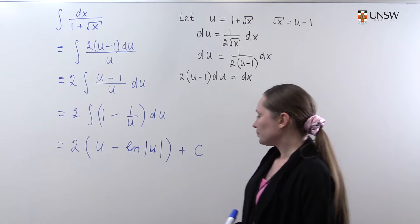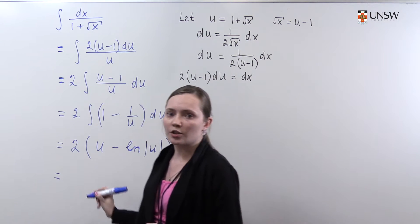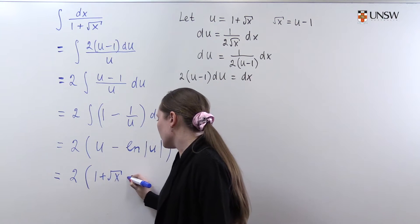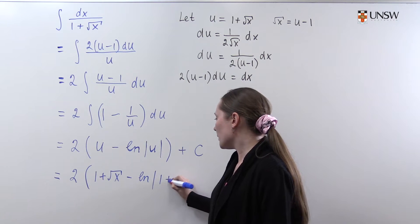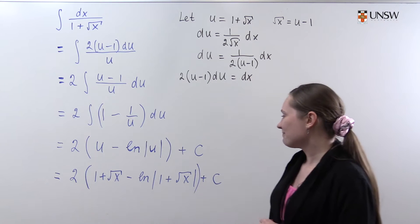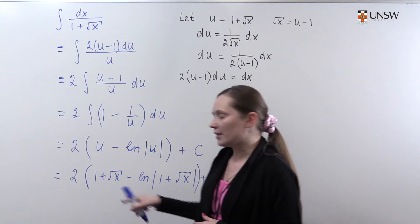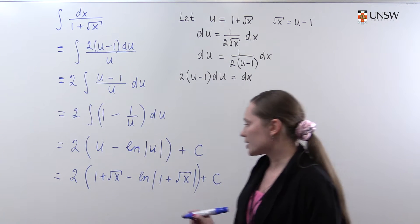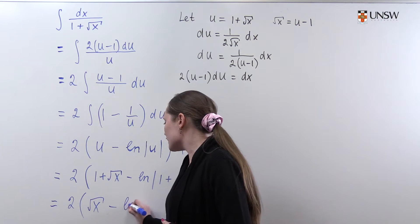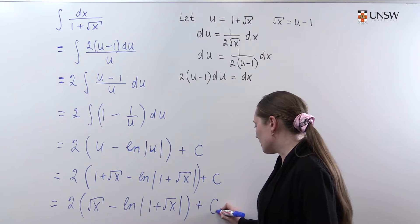Of course we need a constant of integration. Next we use back-substitution to express the answer in terms of x, remembering that u is 1 plus square root of x: we get 2(1 plus square root of x) minus the logarithm of (1 plus square root of x) plus C. Since 2 times 1 is just a constant, the final answer simplifies to 2 square root of x minus the logarithm of (1 plus square root of x) plus a new constant C1.